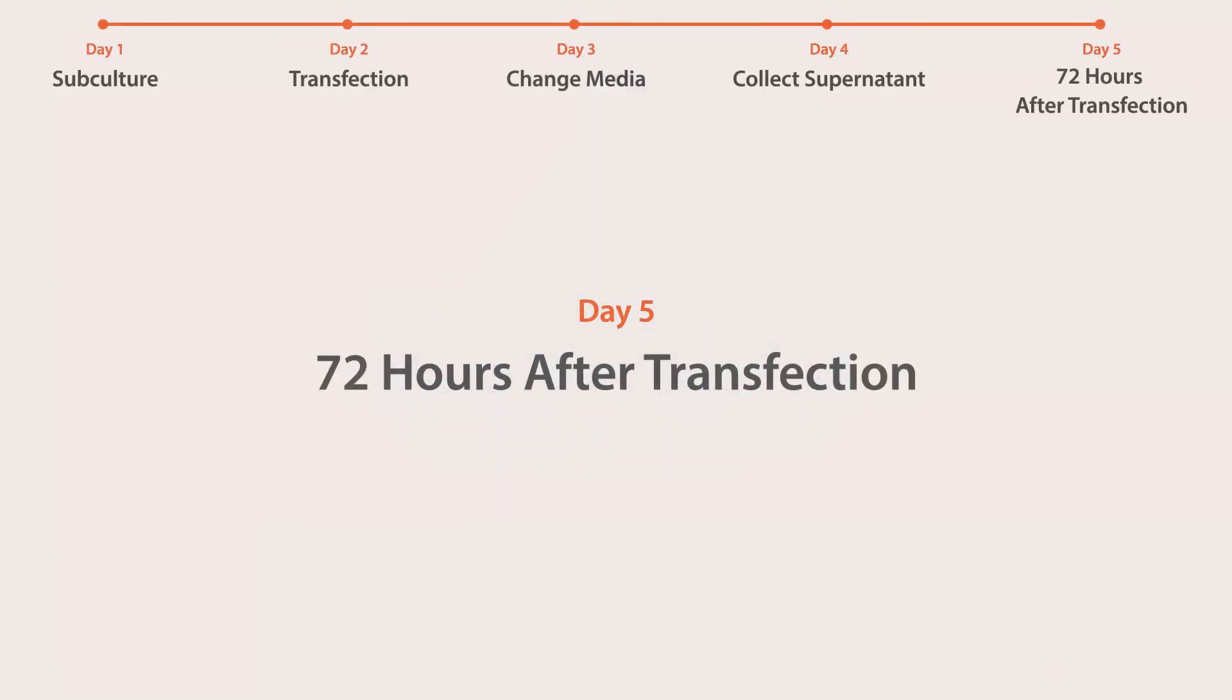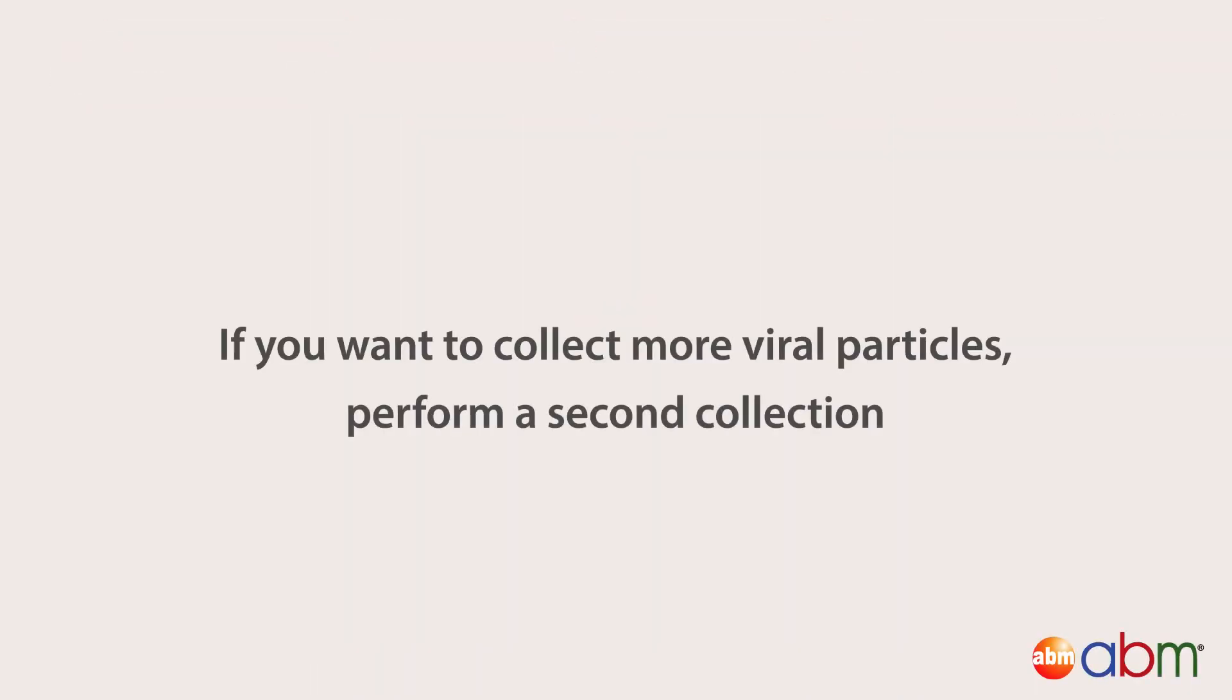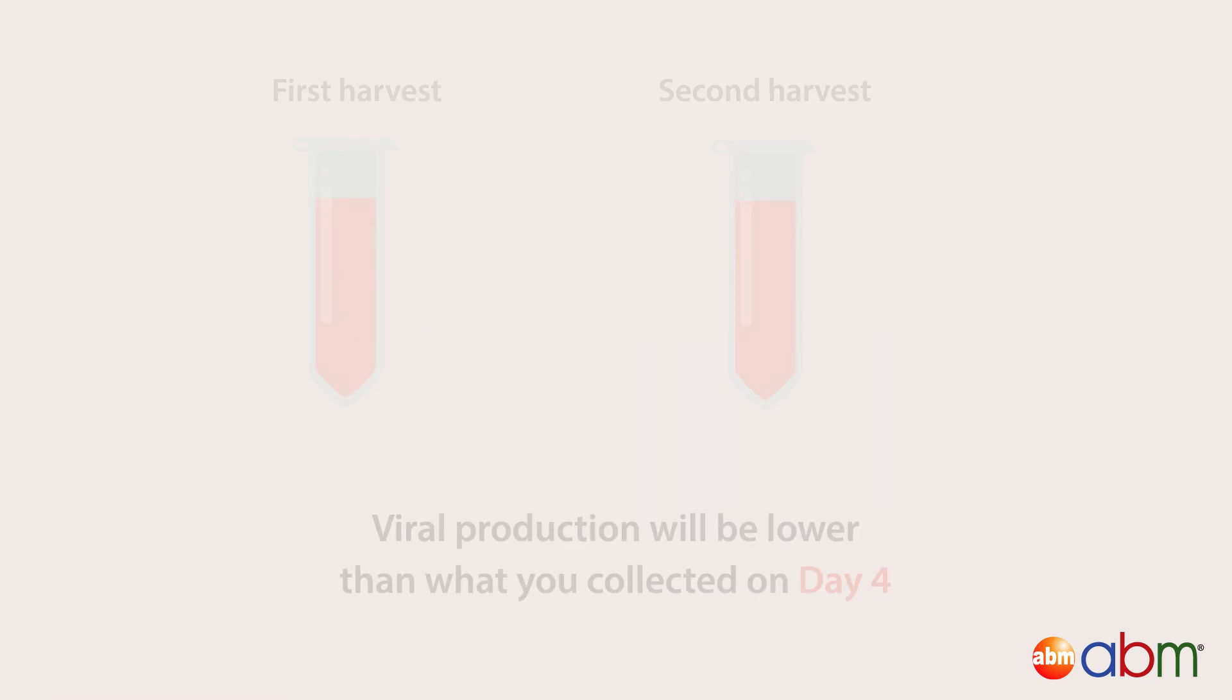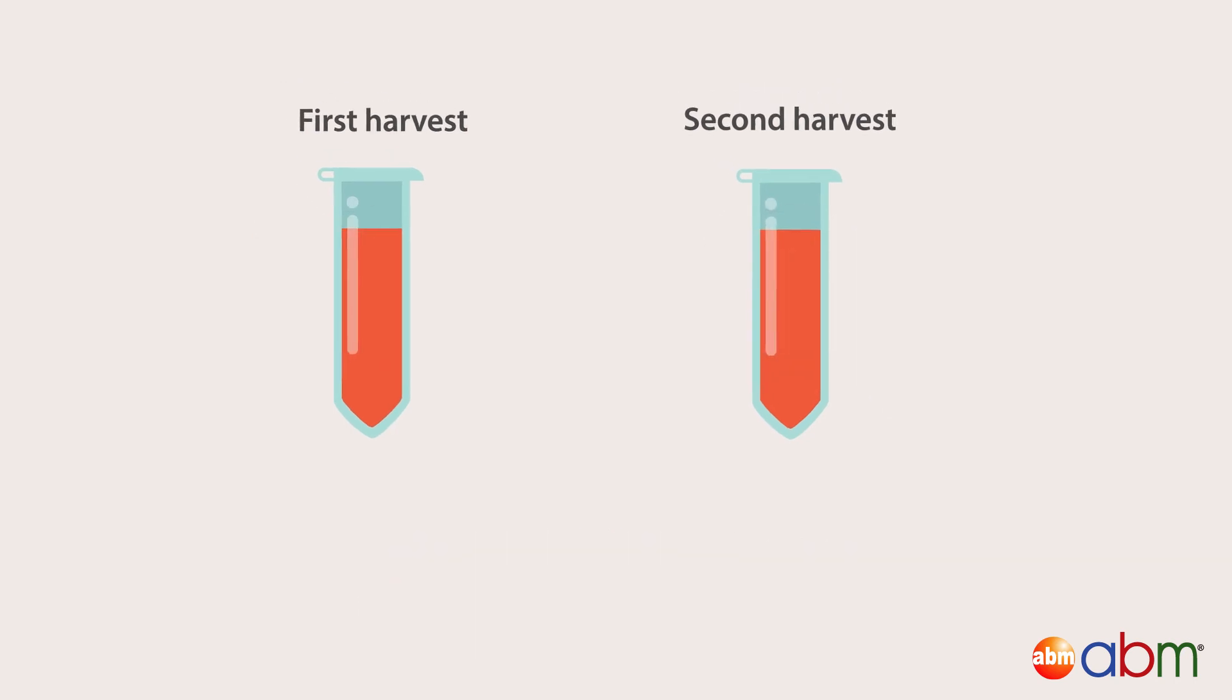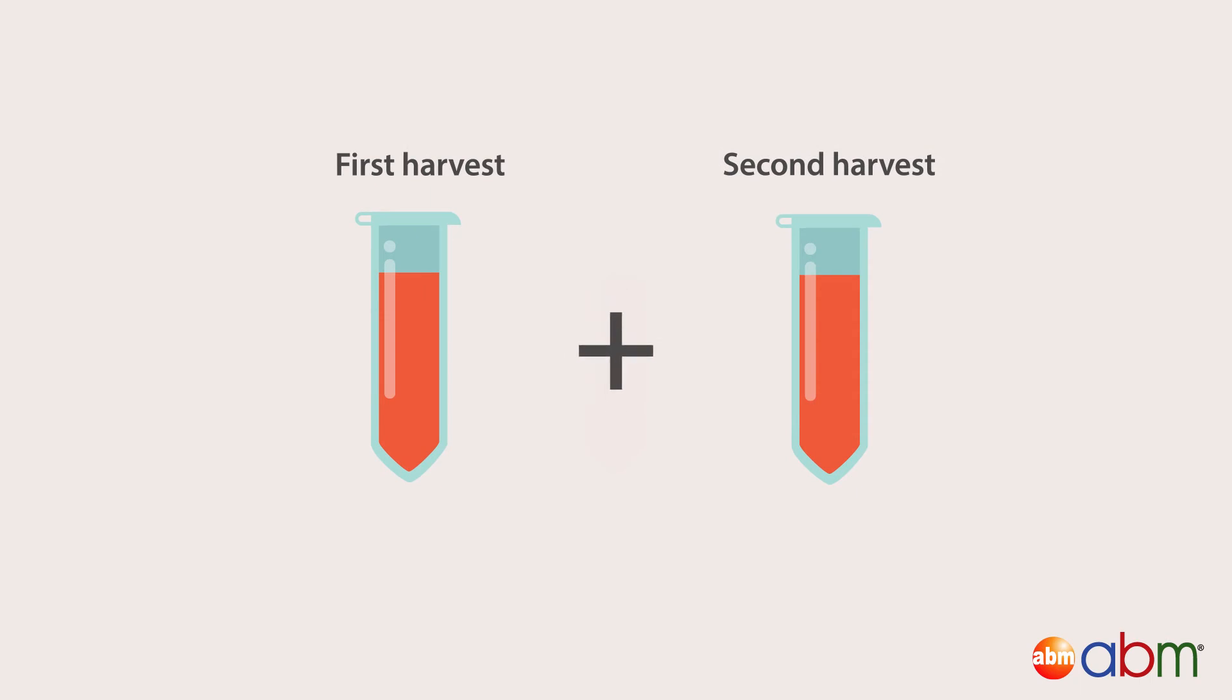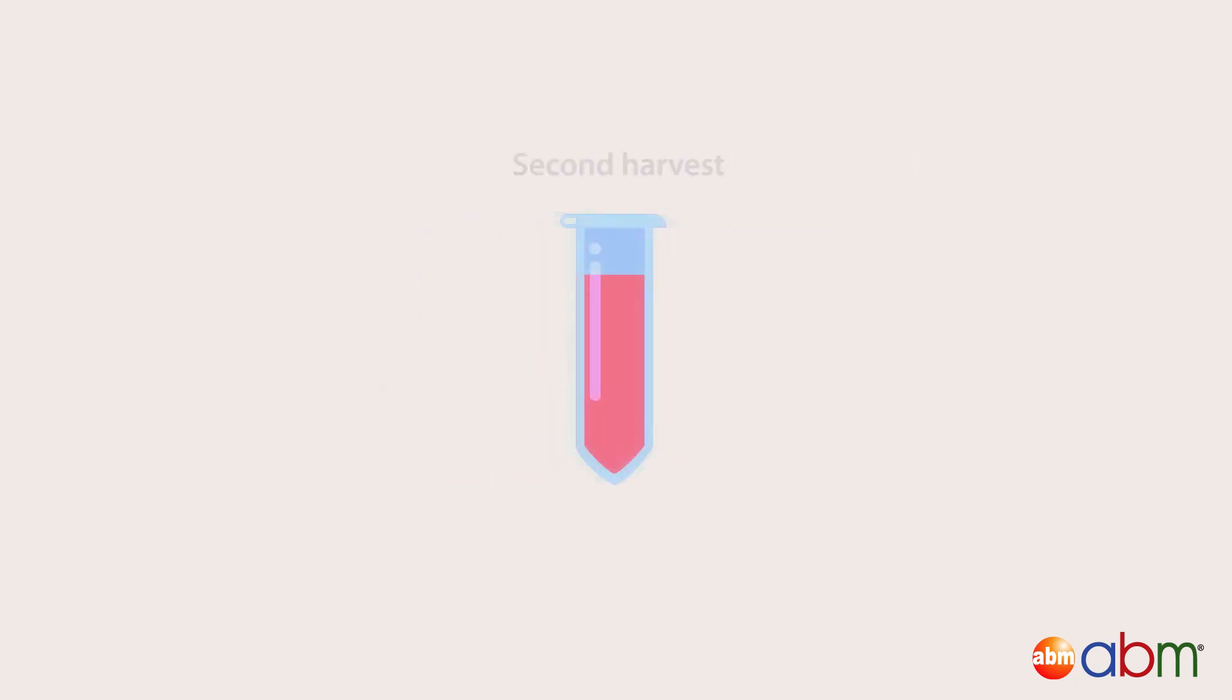Day 5: If you want to collect more viral particles, perform a second collection, though viral production will be lower than what you collected on Day 4. Collect the supernatant. You can combine the second harvest with your first harvest.